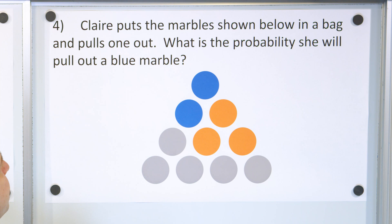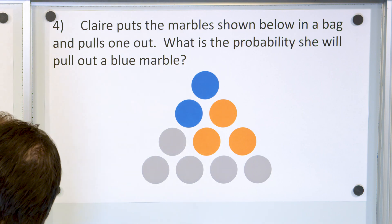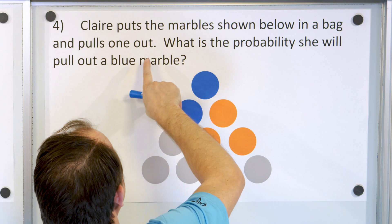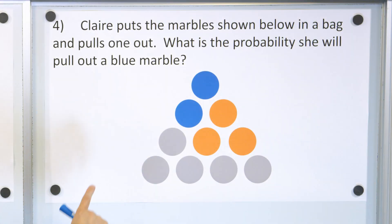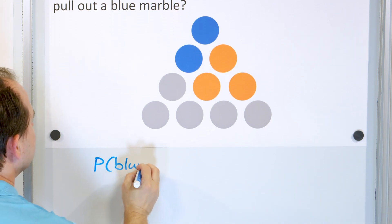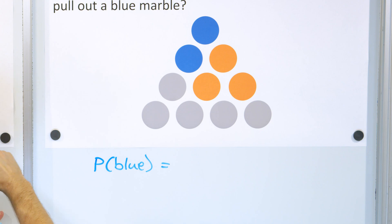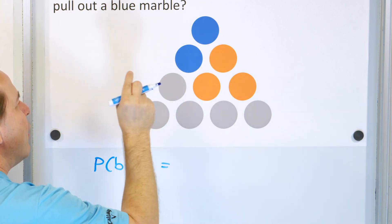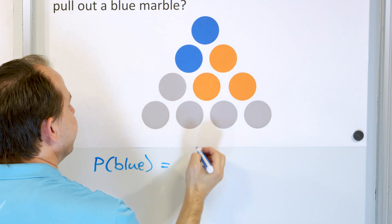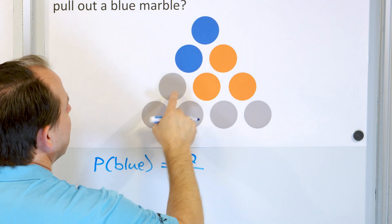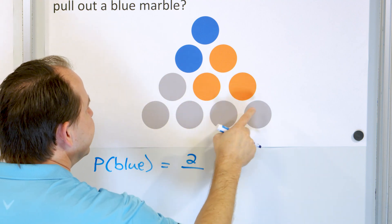Claire puts marbles in a bag and pulls one out. What is the probability she will pull out a blue marble? You ask: how many different ways can I get blue? There are two blue marbles out of a total of ten marbles — so 2 out of 10.